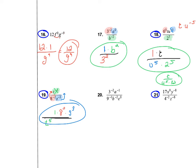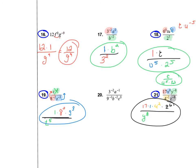Number 21 — we'll go step by step. First, the number 17 stays on top unchanged. Next to it, x to the 0 is just 1, since anything to the 0 power is 1. Then y to the negative 8th moves to the bottom. On the original bottom, 4 to the negative 2nd moves to the top with a positive exponent of 2, and z also had a negative exponent on the bottom, so it moves to the top and becomes positive. This would be a great way to leave your answer.